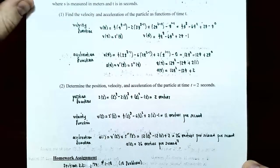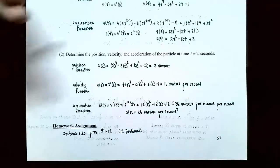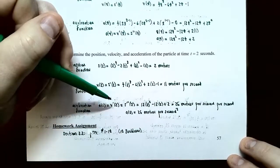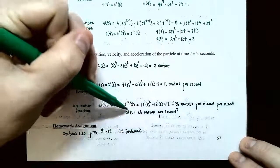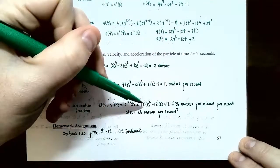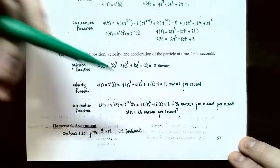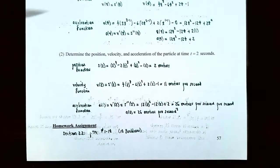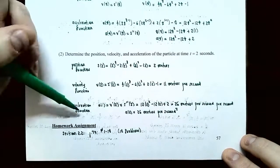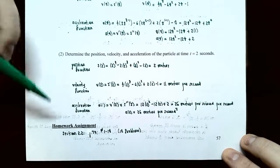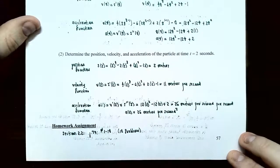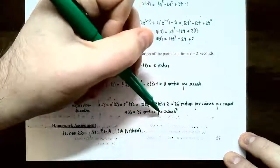Acceleration: a of 2 equals 12 times 2 squared minus 12 times 2 plus 2, which equals 26. The units for acceleration are meters per second per second, or 26 meters per second squared. This tells us how fast the velocity is changing for the particle at 2 seconds.